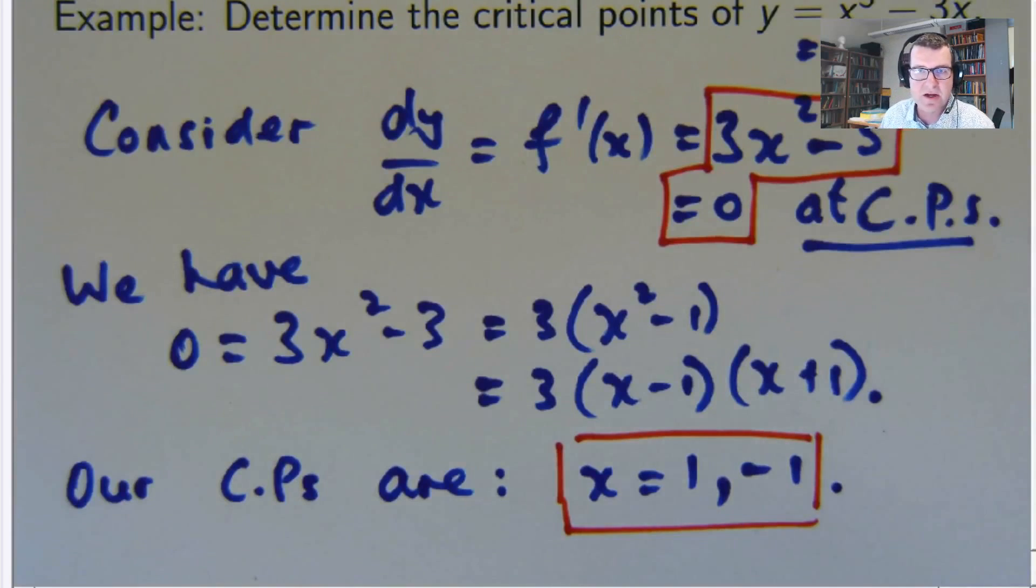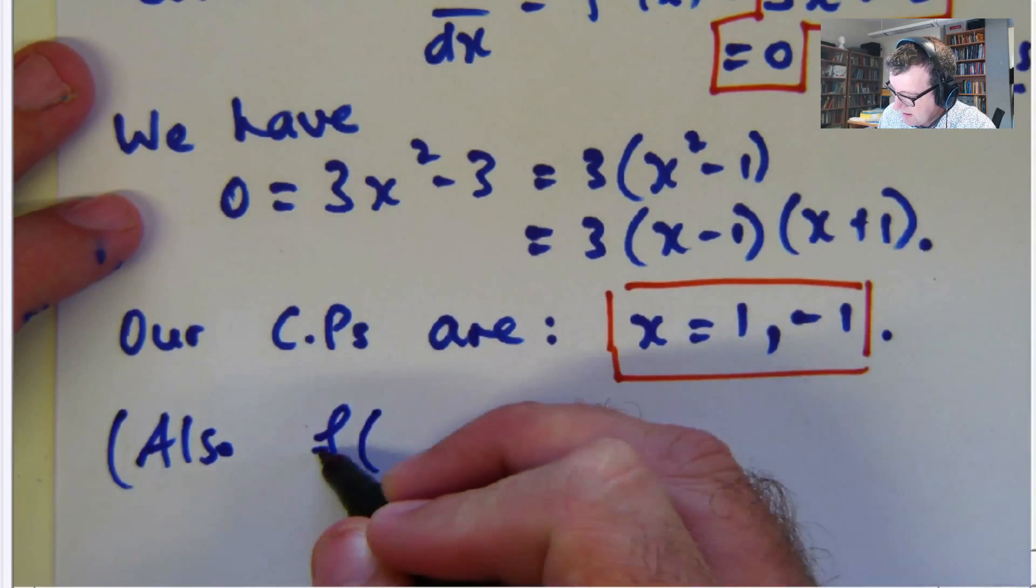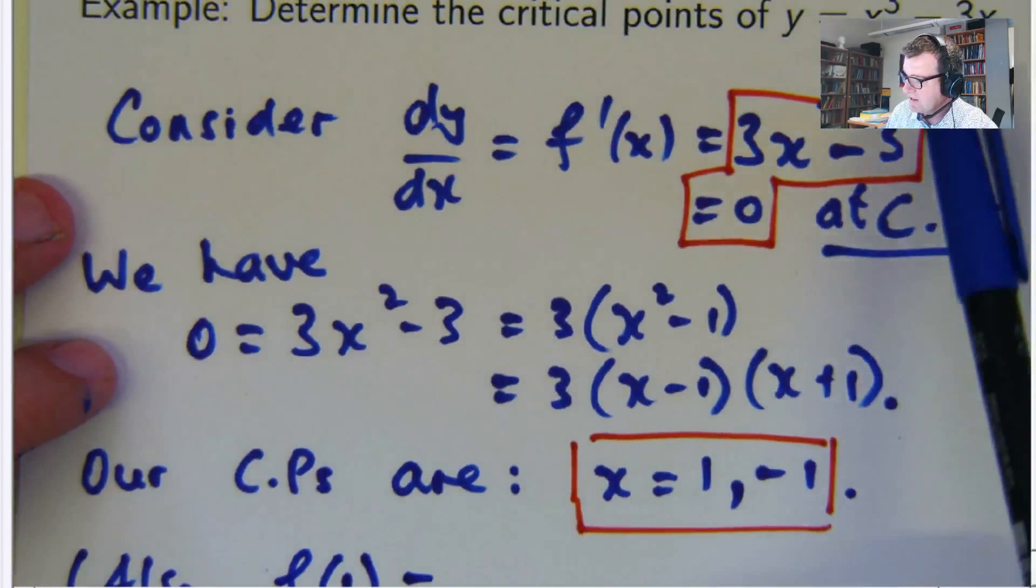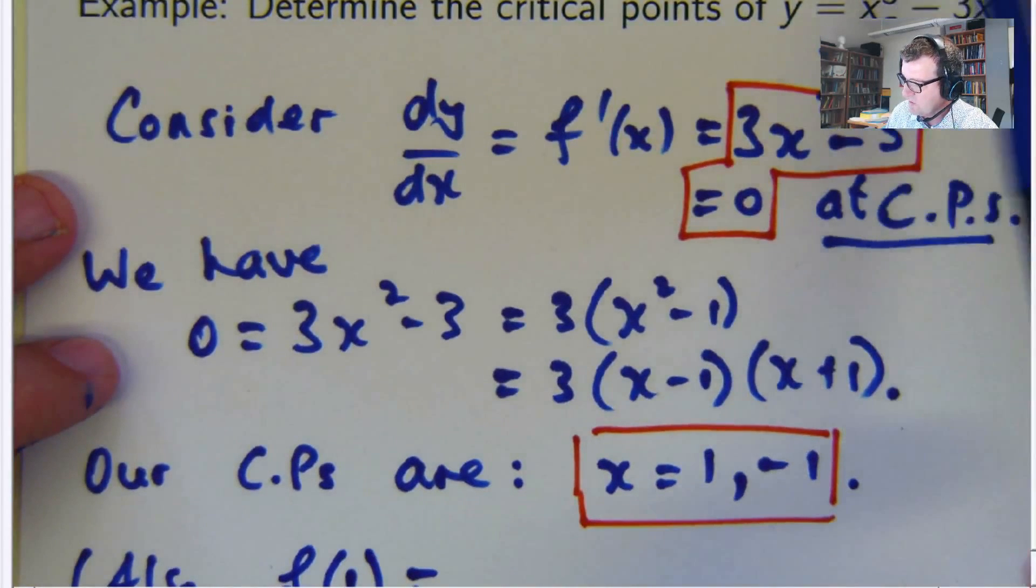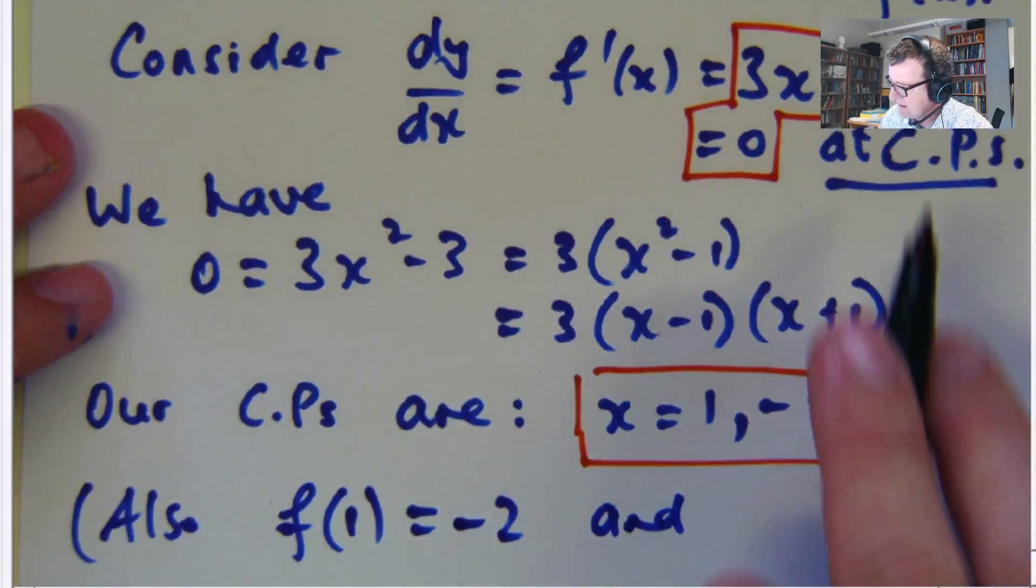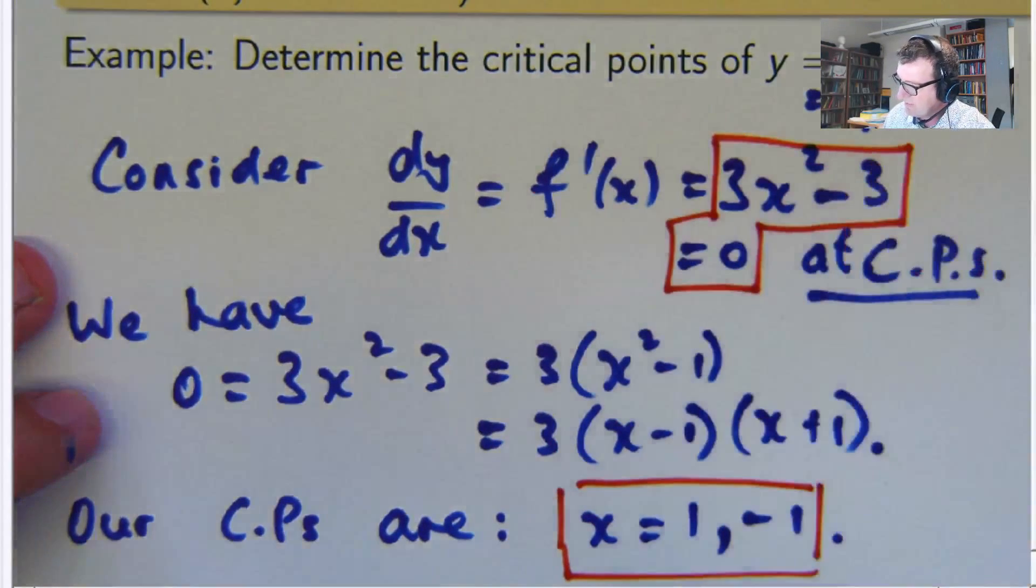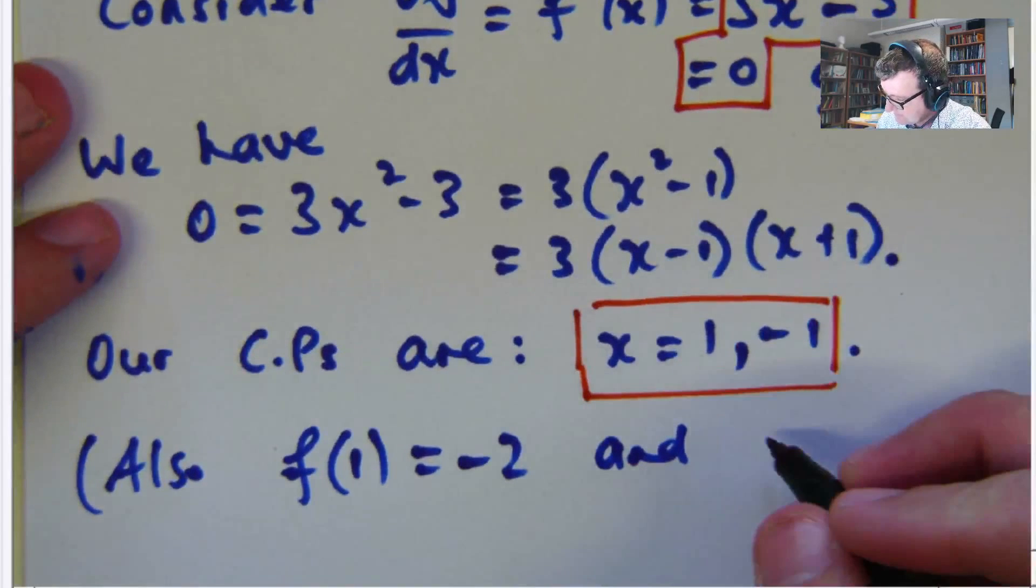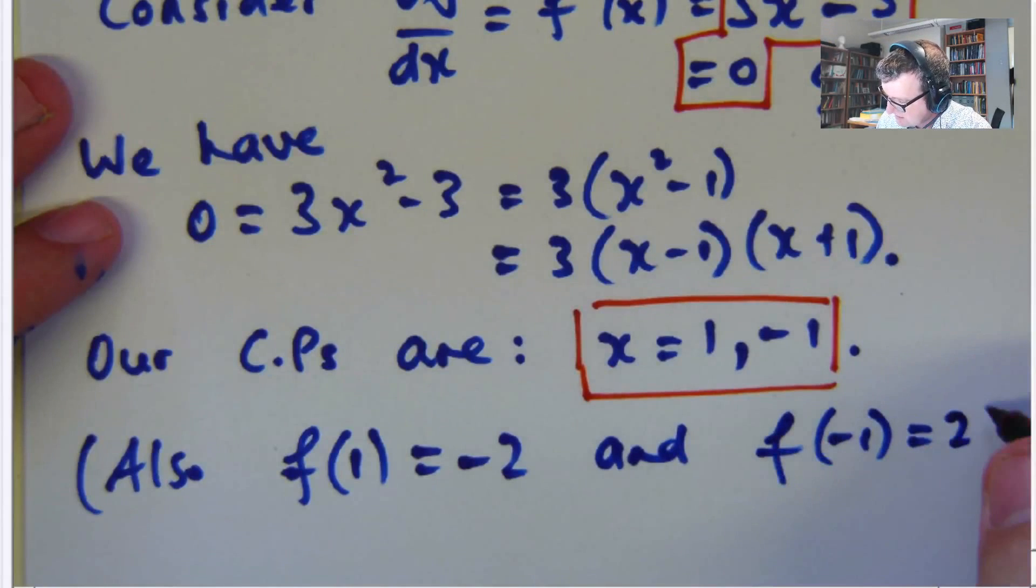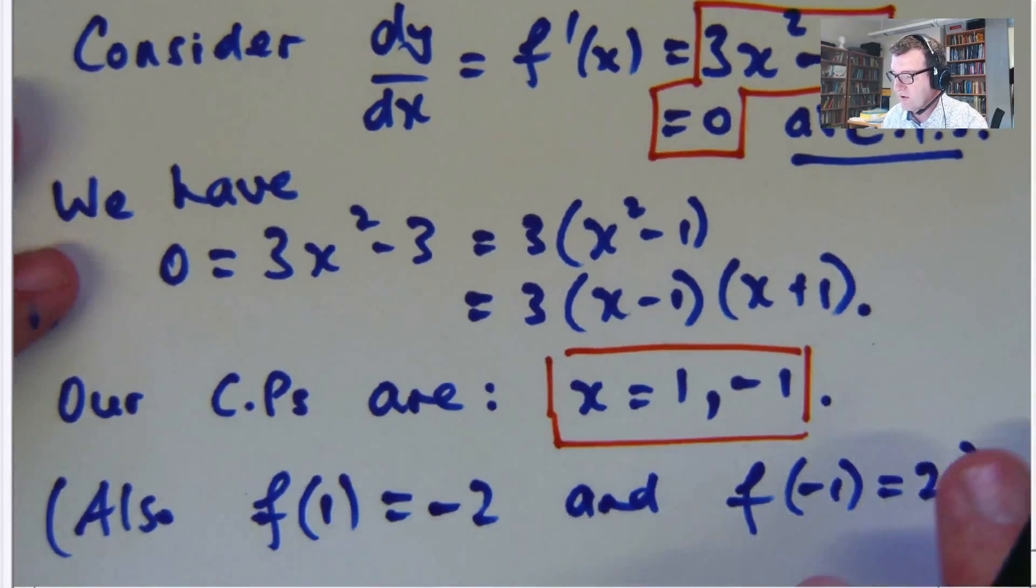You're not asked to do that, but I'm going to put it in anyway. So f of 1, if I go up here and put in x equals 1, I get 1 cubed minus 3 times 1. So that's negative 2. And if I put in x equals negative 1, I get negative 1 cubed minus negative 3. So that's negative 1 plus 3, which is 2. Now you're not asked to get this, but this is something that you'll be asked to do later on.